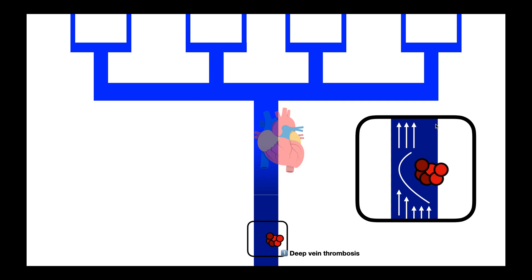And you can see right here, here's a deep vein, here's the wall of the vein, and we have a blood clot that has formed. This is the DVT.